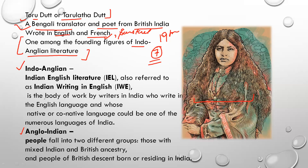Indo-Anglian and Anglo-Indian seem similar, so let's clear the concept. Indian English Literature — also called Indian Writing in English — is the body of work by writers in India who write in the English language and whose native or co-native language could be one of the numerous languages of India. These writers' mother tongue is any one of India's 22 languages, but their writing is in English — that is why we call them Indo-Anglian.